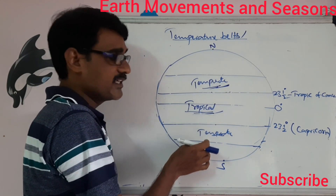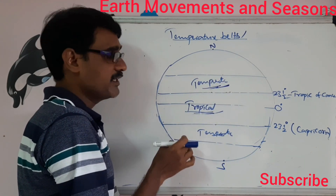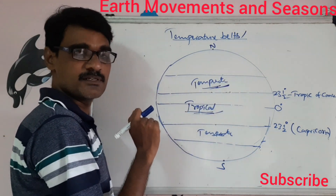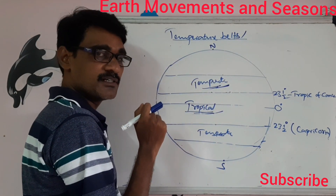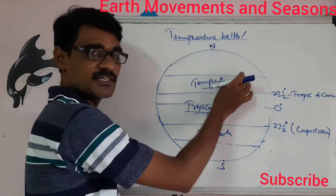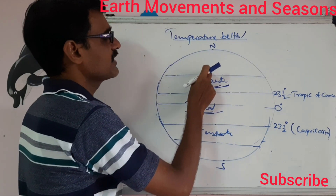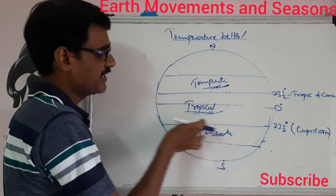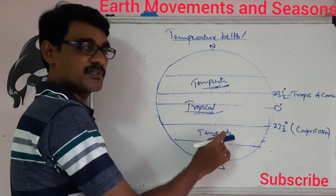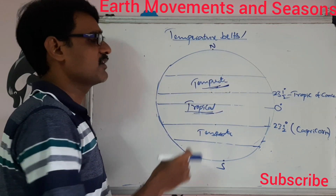Moving towards the north or south from the tropical zone, we reach the temperate zone, which exists in both the northern and southern hemispheres. The temperate zone has warm summers and very cold winters. Further toward the north or south from the temperate zones, we get the polar zones, which are very cold regions.